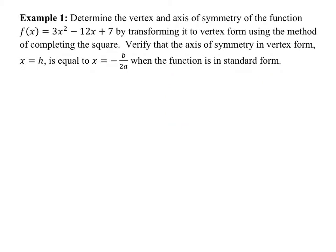Let's take a look at the first example. It says determine the vertex and the axis of symmetry of the following function by transforming it to vertex form using completing the square. We've done completing the square before. With completing the square, we have the equation set equal to zero, move C over, divide by A, take half of B and square it, add it to both sides.